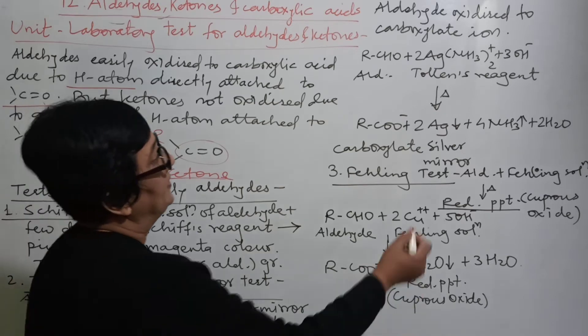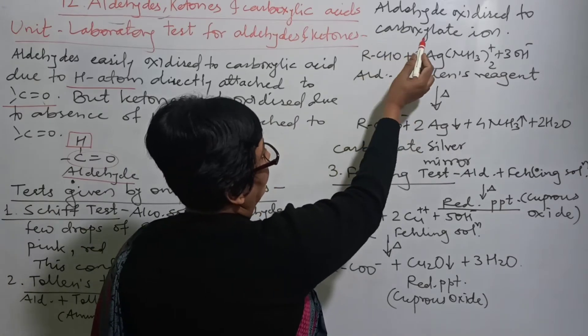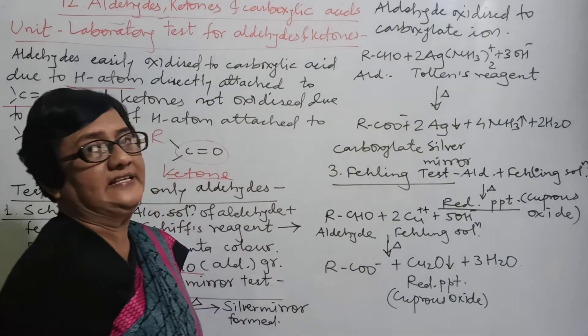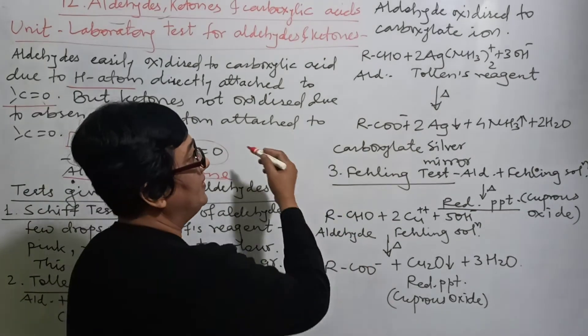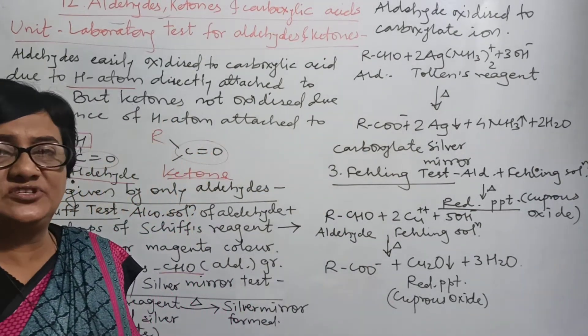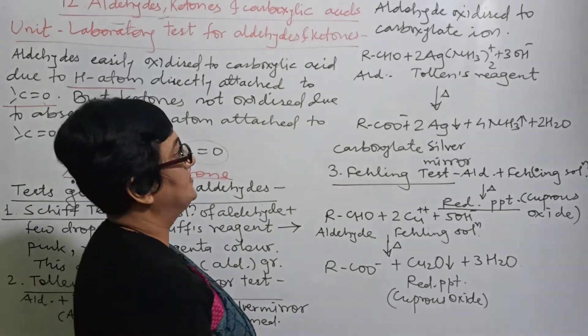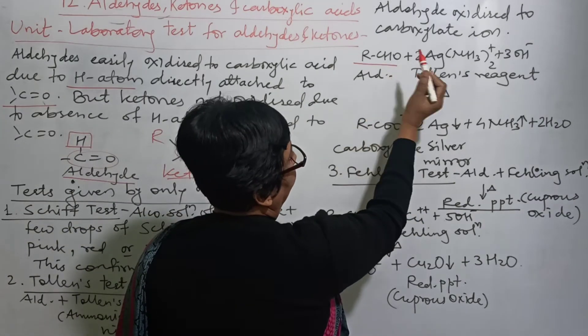So how is the reaction? Aldehyde oxidized to carboxylate ion. This is the carboxylic acid. We have told in the first question that the conversion of the CHO group to carboxylic acid. So if this is the Tollen's reagent, Tollen's reagent has these types of ions: Ag(NH3)2+ which is positive charge and hydroxide negative charge.